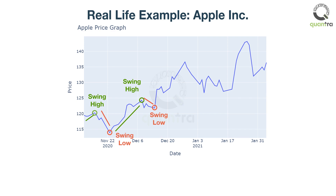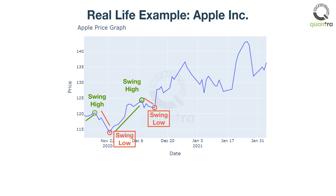An interesting observation can be made from this graph. The price at the second swing high is more than the price at the first swing high. Similarly, the price of the second swing low is higher than the price of the first swing low. This typically happens in a trending stock.